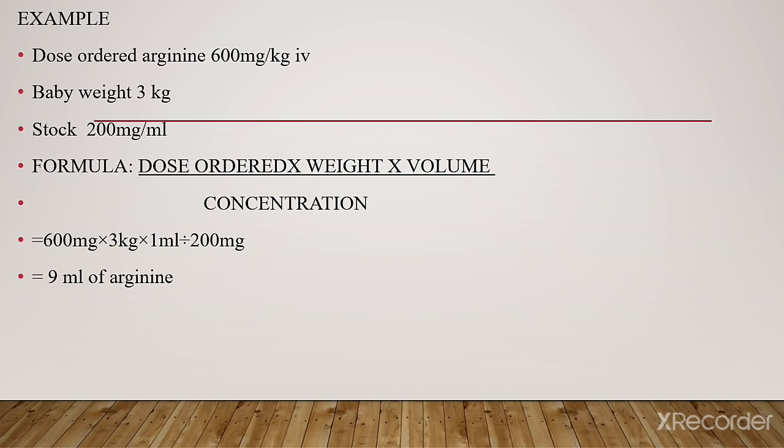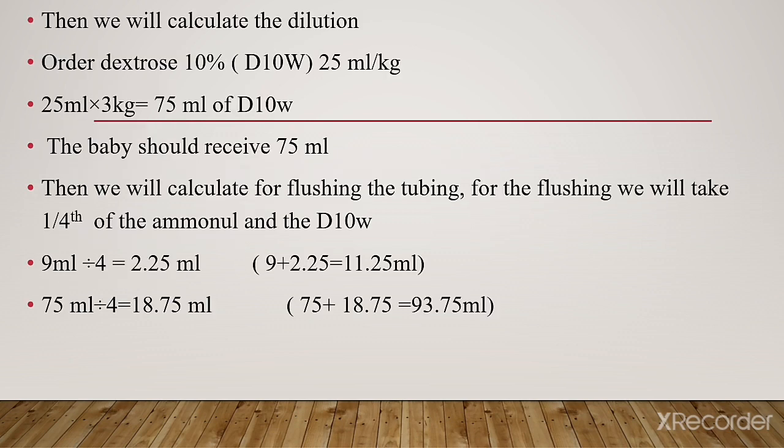Example: dose ordered arginine 600 mg per kg IV, baby's weight 3 kg, stock 200 mg per ml. Formula: dose ordered times weight times volume divided by concentration. So 600 mg × 3 kg × 1 ml ÷ 200 mg per ml gives 9 ml of arginine. For dilution, 25 ml per kg is constant: 25 ml × 3 kg equals 75 ml of dextrose in water.